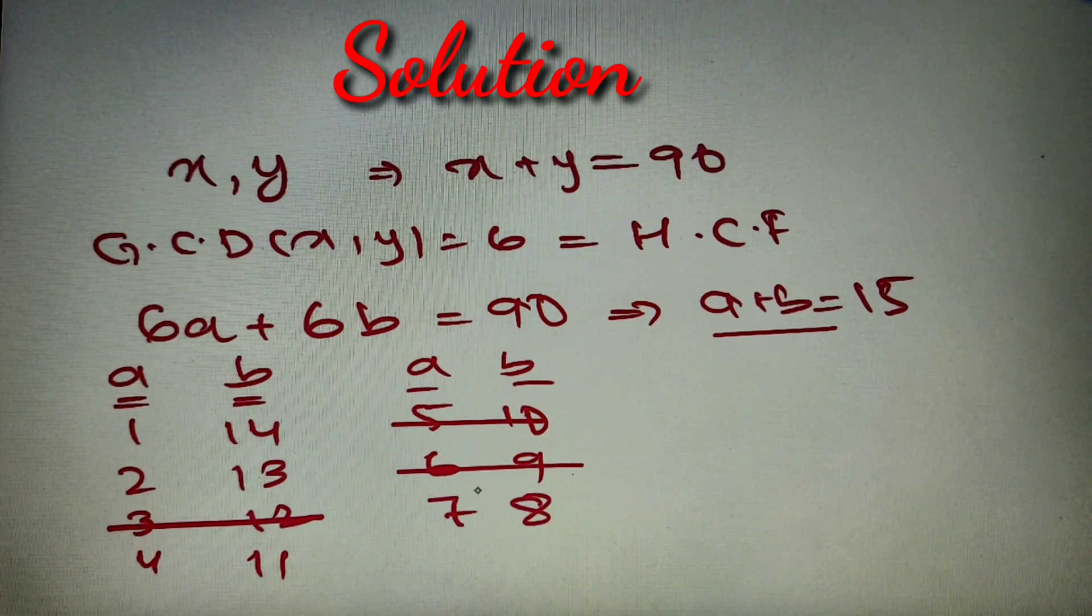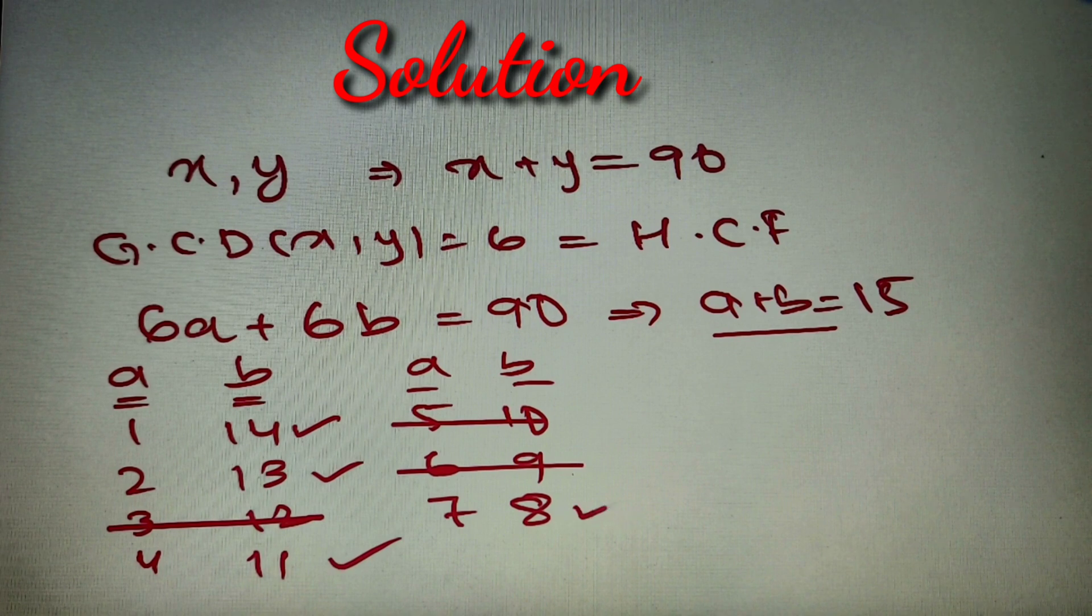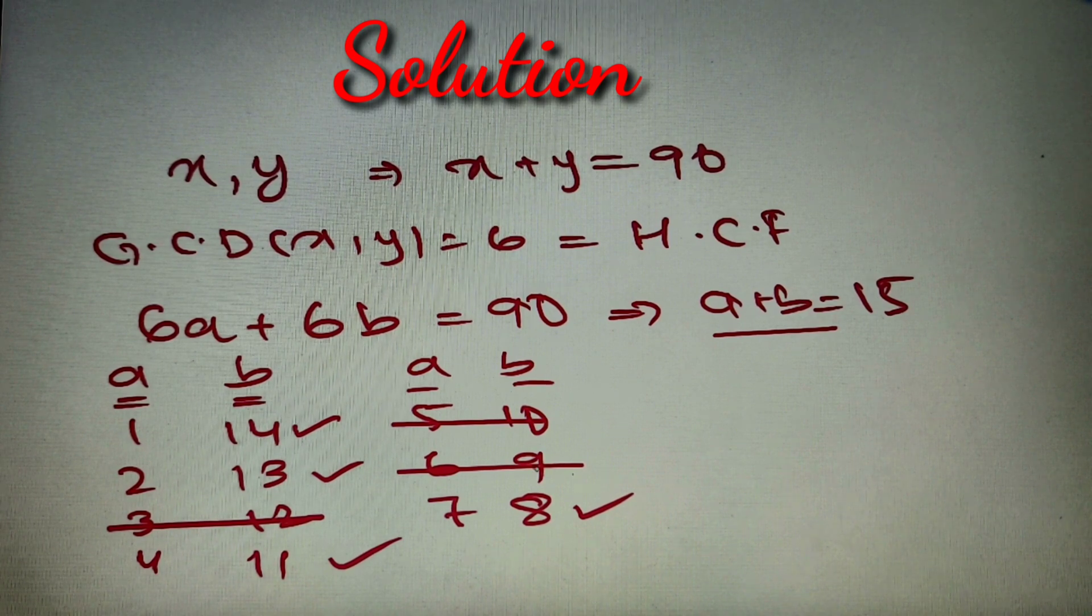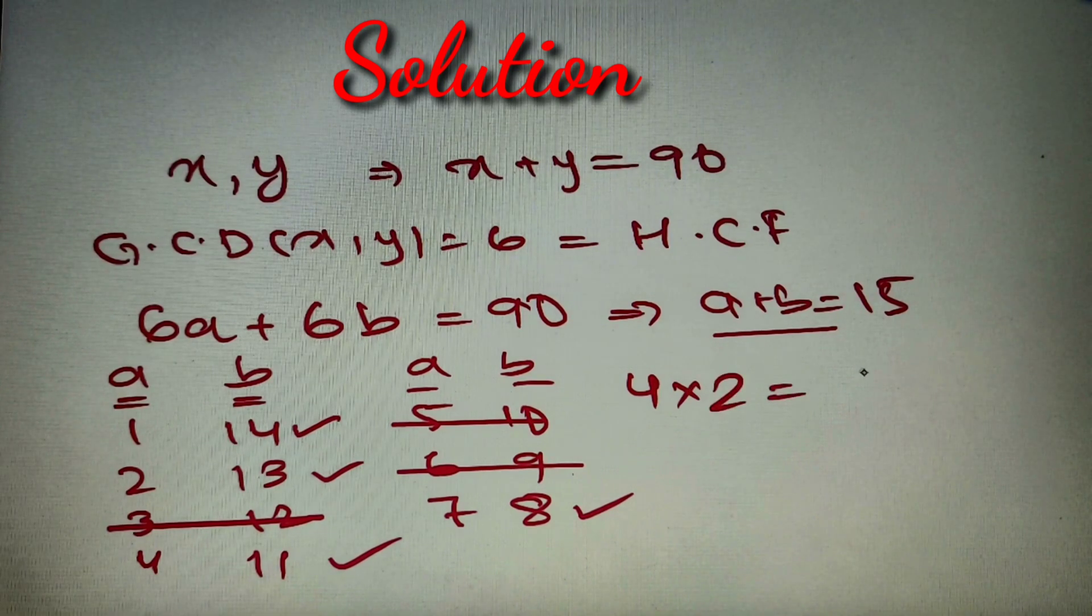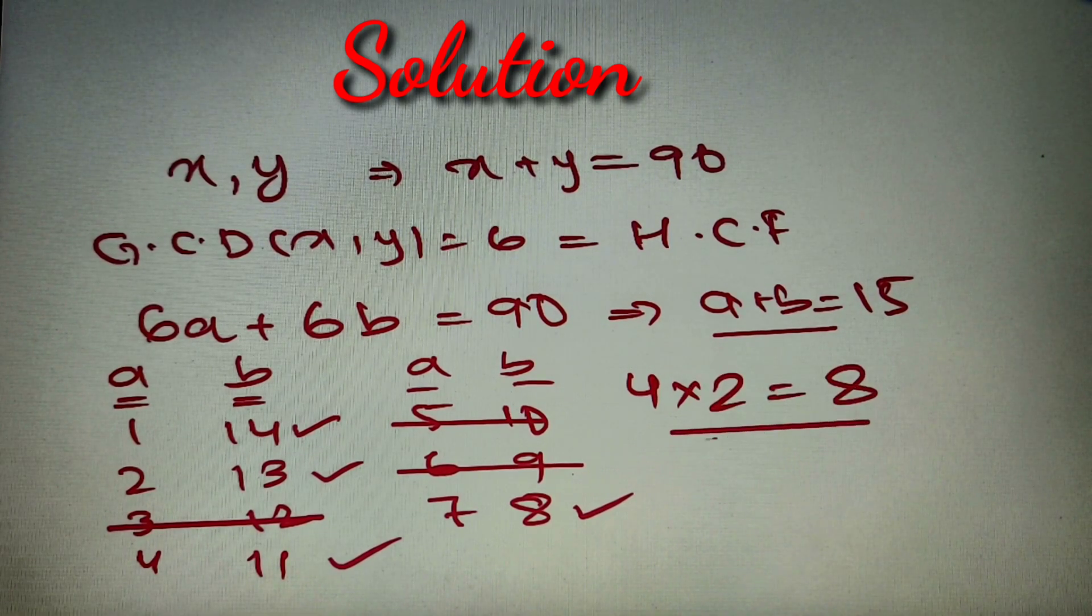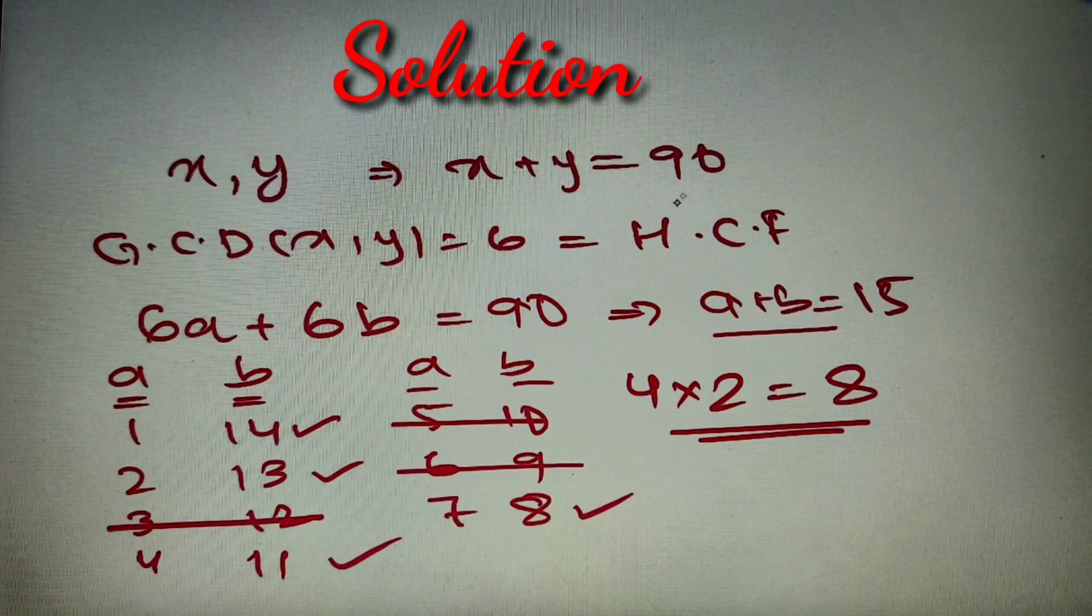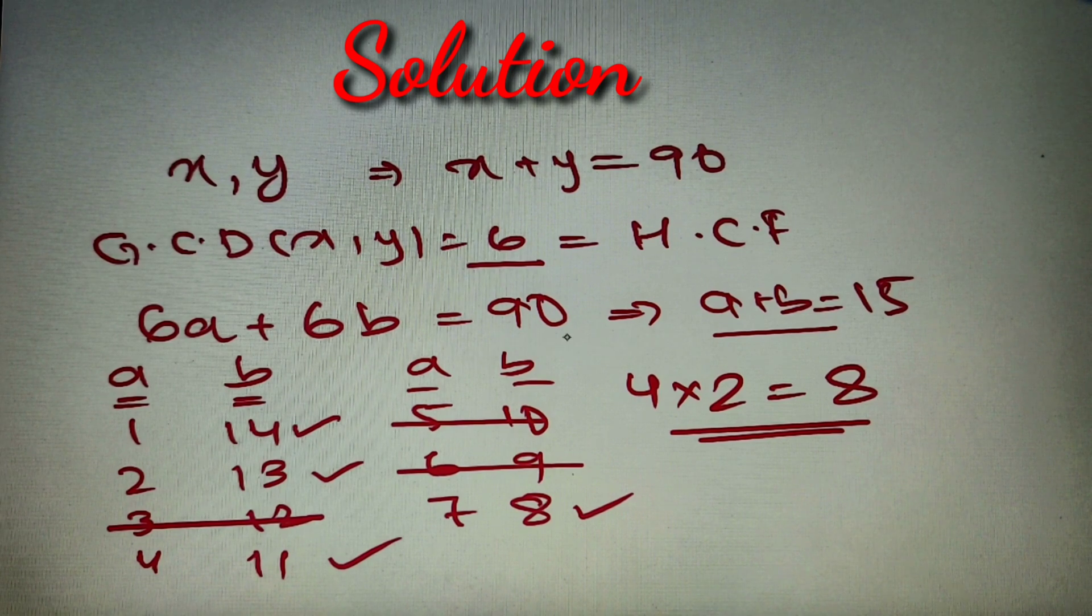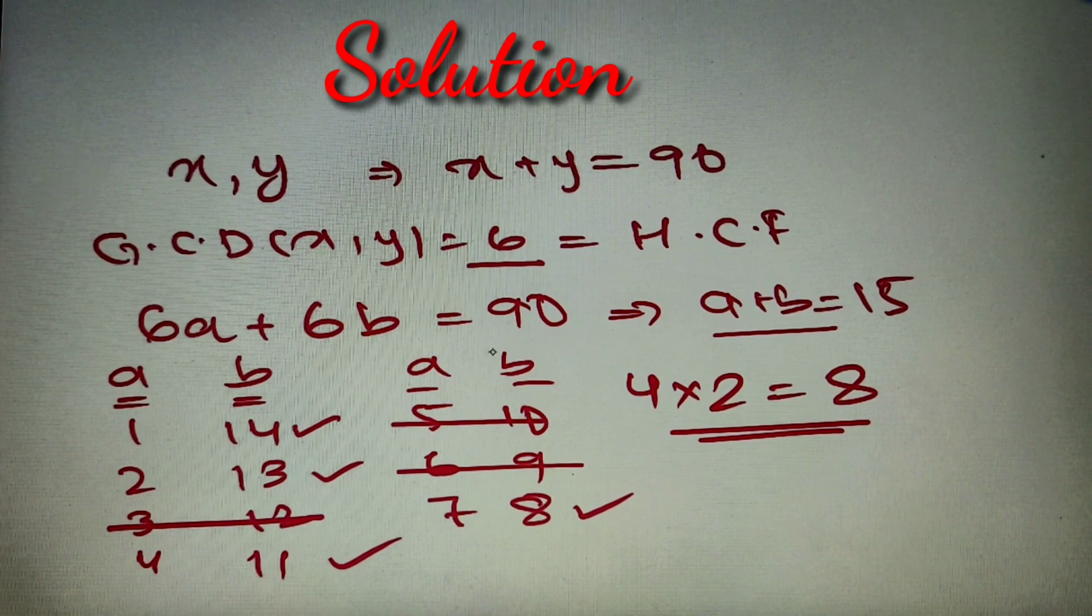From 1 to 7 we have 4 cases. You'll say why we have not moved to 8, 7, because the numbers will start to repeat. So we can directly multiply the total cases by 2. Our final answer is 4 × 2 = 8. We'll have 8 ordered pairs of x, y such that x + y = 90 and the greatest common divisor is 6. According to our given question, our answer is option C, 8.